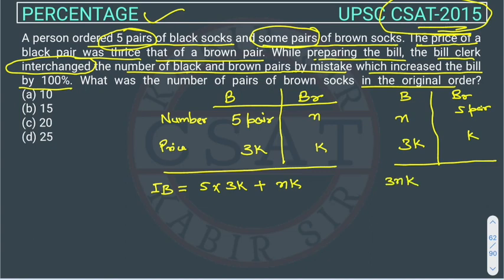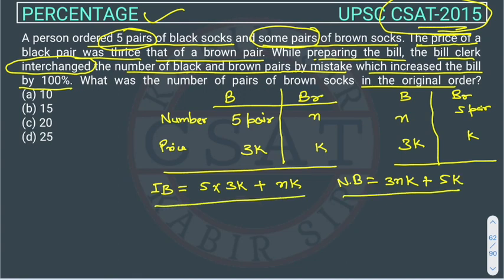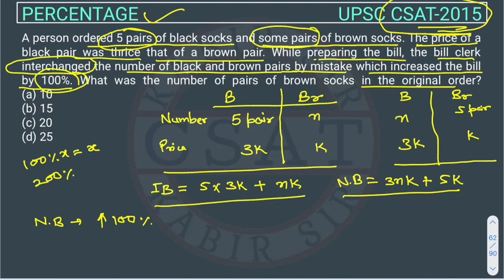The new bill after the interchange will be: n pairs of black at 3k, plus 5 pairs of brown at k, giving 3nk + 5k. Now, since the bill increased by 100 percent, we know that 100 percent of a number is that number itself, so the new bill equals 200 percent of the initial bill.